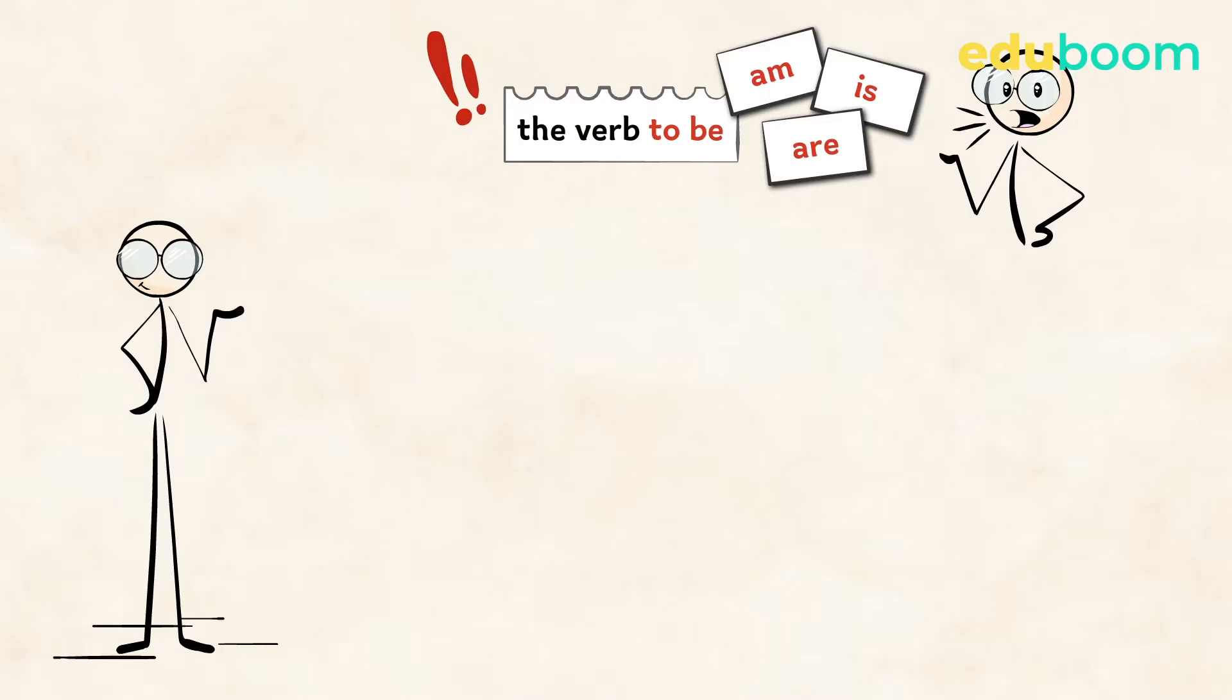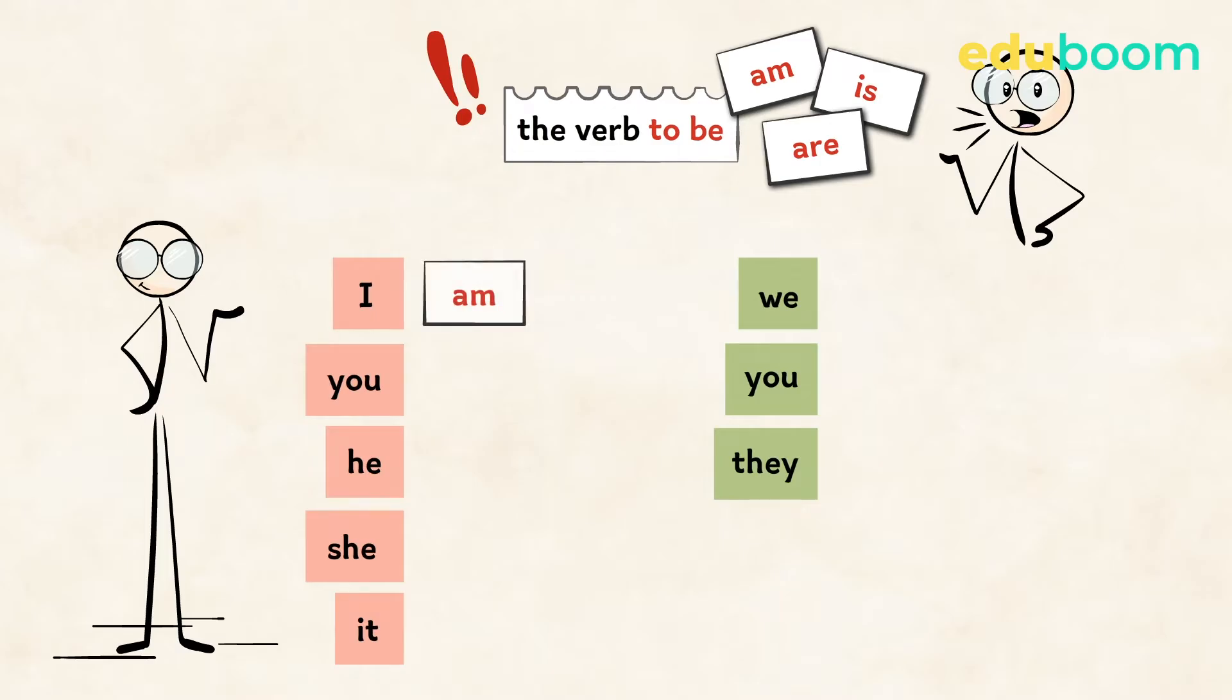Let's write down the personal pronouns first. I, you, he, she, it, we, you, they. And now we'll add the forms of the verb to be. I am, you are, he is, she is, it is, we are, you are, they are. Great!